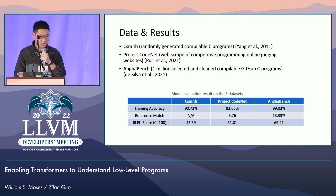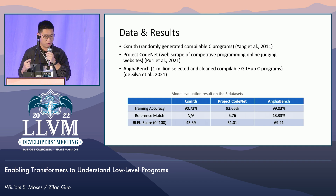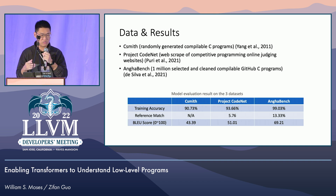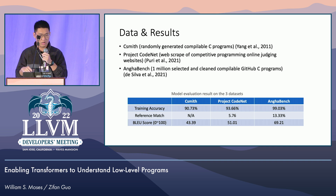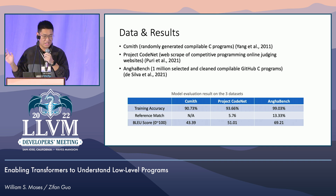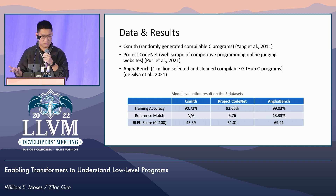Then we moved on to Project CodeNet, which is a web scrape of competitive programming judging websites. The problem is that there are a few hundred thousand questions and then a few thousand to a million answers to them, and all the answers to those questions are somewhat similar and even repetitive. So that doesn't generalize well to the language itself either.